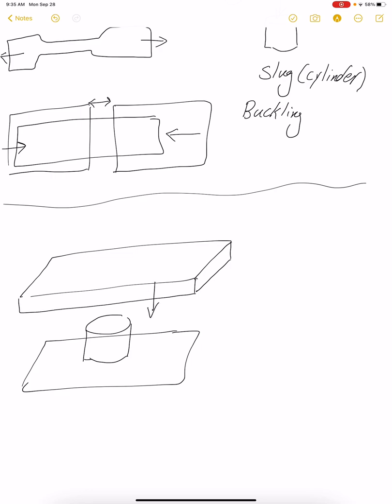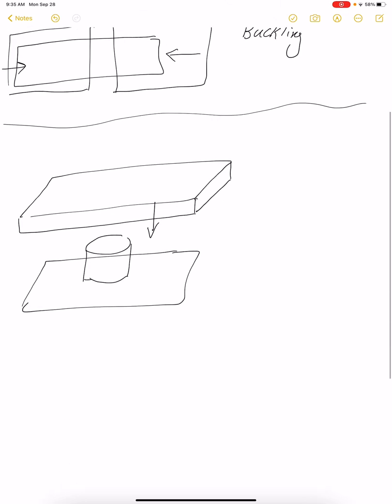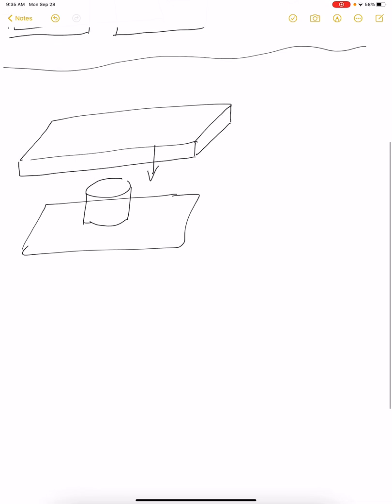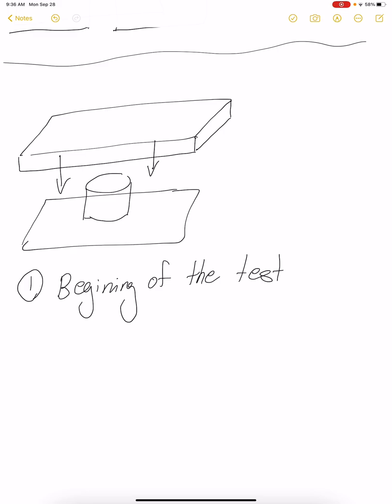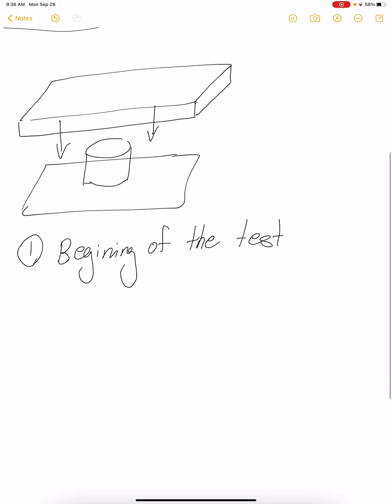The top plate is going downwards and applying compression or compressive force. But there are two points in compression that are different than tensile testing: one is the beginning of the test, and the other is the end of the test. For the beginning, the plate is going down until it touches the surface of our specimen.